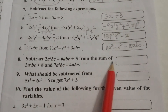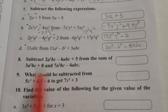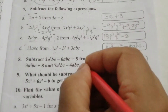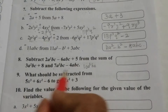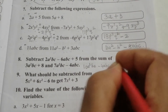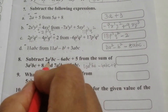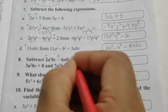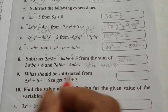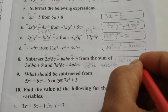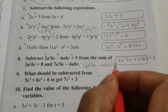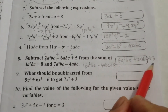Question 8: Subtract the given expression from the sum of the other two. First, add 3a²bc plus 7a²bc to get 10a²bc, minus 4abc plus 8. Then subtract by changing signs: 10 minus 2 is 8a²bc; minus 4 plus 6 is plus 2abc; 8 minus 5 is plus 3. Answer: 8a²bc plus 2abc plus 3.